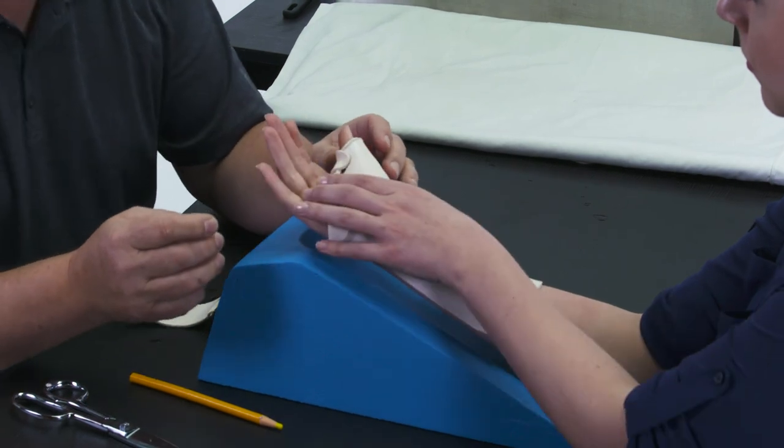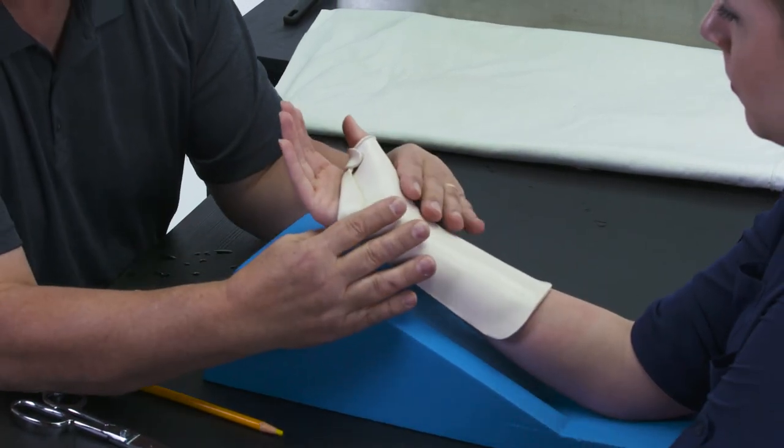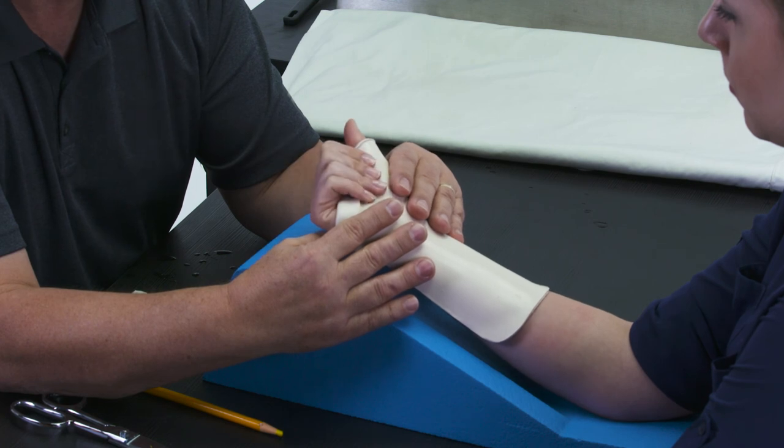Place splint on patient's hand, making sure the IP joint of the thumb and the MPs have free range of motion.